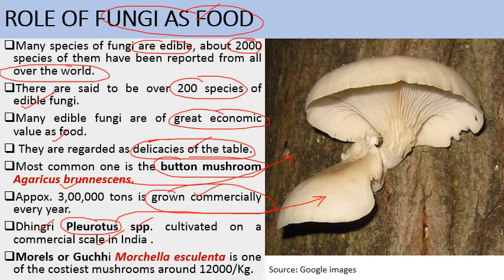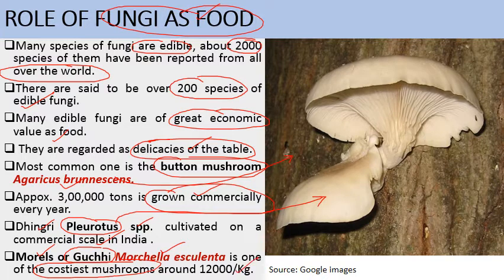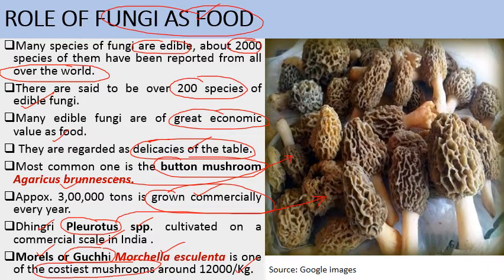One more important fungi is Morals, also commonly known as Gucci. Its botanical name is Morchella esculenta. It is one of the costliest mushrooms, with a rate of about Rs. 12,000 per kg. It is a very delicious vegetable and it is naturally grown in hilly regions, mostly in pine forests.